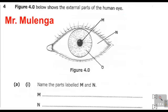Welcome to another biology presentation. Right here with me, I want us to go through question 4. Question 4 reads: figure 4.0 below shows the external parts of the human eye. So this is figure 4.0, which is showing the external parts of the human eye.